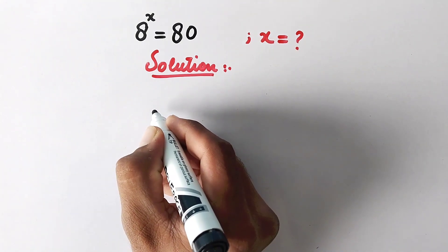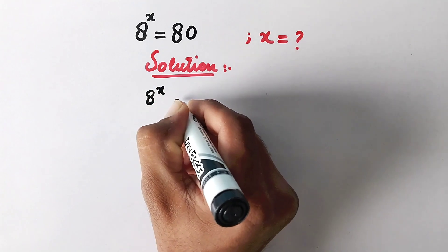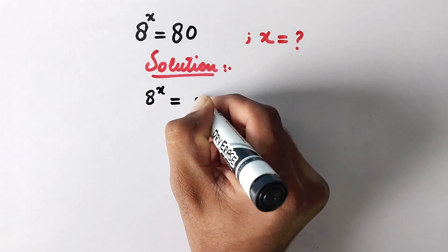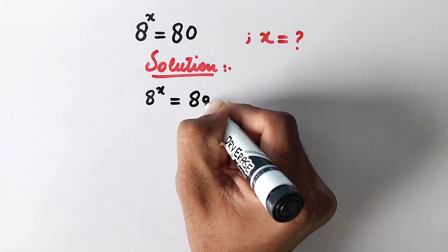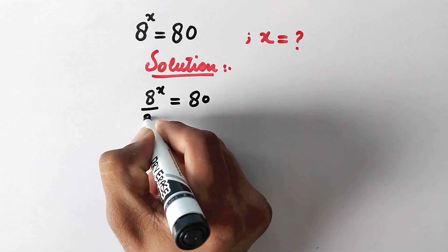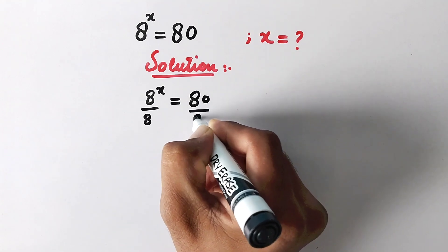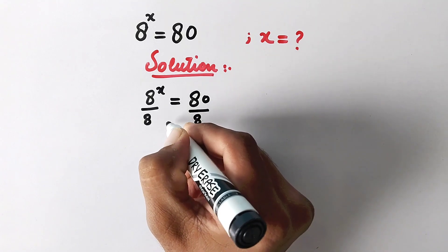In the first step, we will write 8 to power x is equal to 80, and we can divide both sides by 8. So here we can apply a rule of exponents.